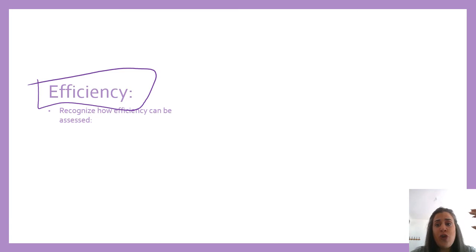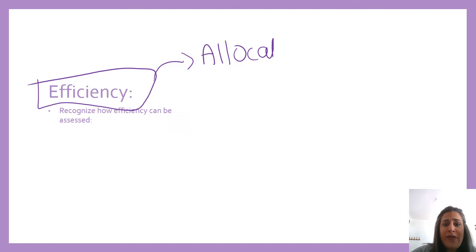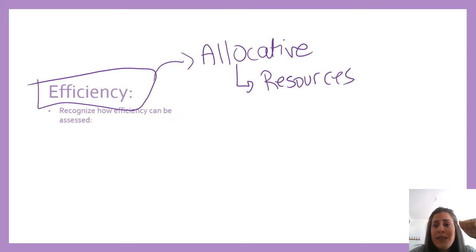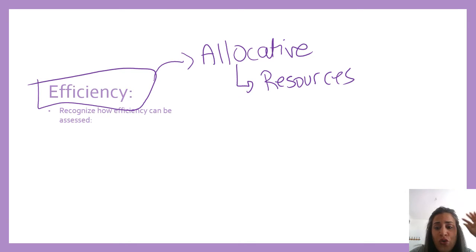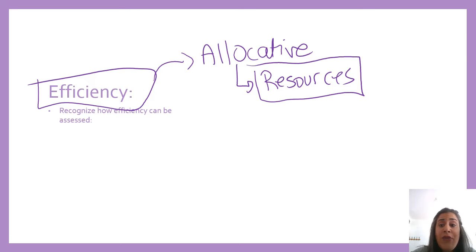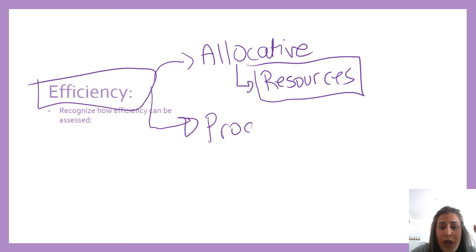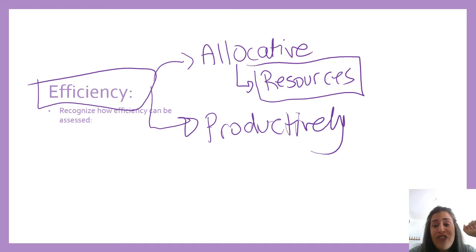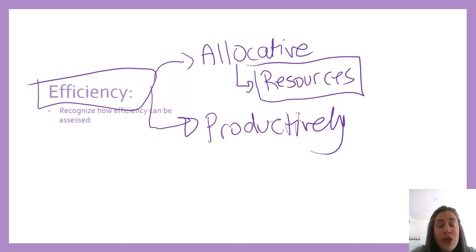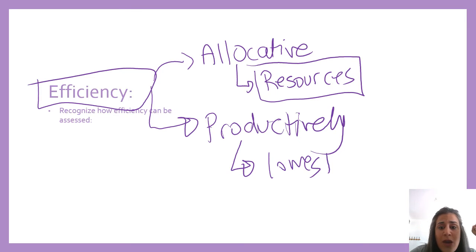Efficiency is a term where it could be allocative efficiency, and I need to relate it to the term resources. When resources are allocated to produce the right products in the right quantities, this is allocative efficiency — you do not want to overproduce or underproduce, so you're using your resources to the best. Then there is productive efficiency, which is when products are produced at the lowest possible cost, making full use of resources. I will always relate productive efficiency to the term 'lowest cost of production.'